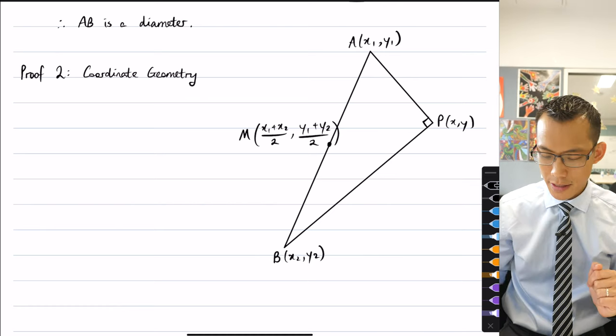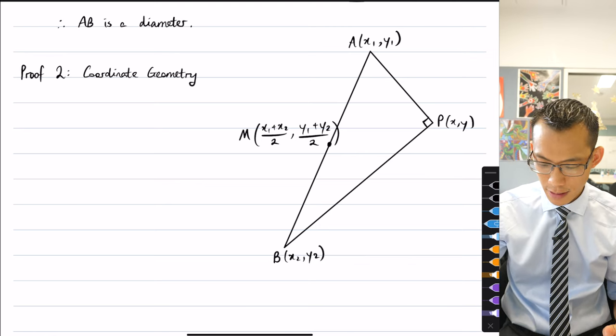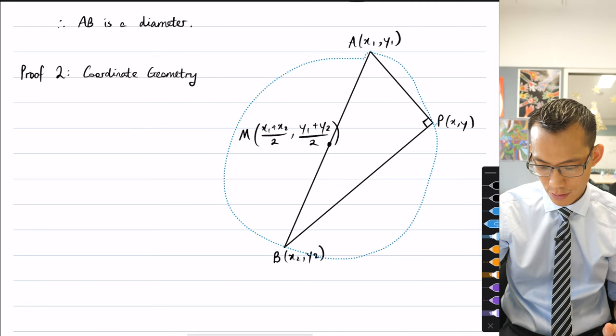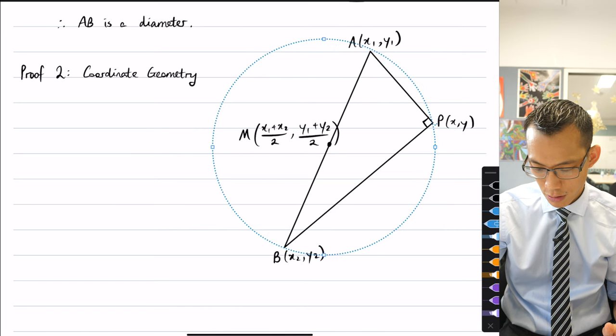Now the reason why this is helpful is I can then say hey, if there's some mystical circle, something like this. Wow that's horrendously drawn but you get the idea. If I've got some circle like so, it's not bad actually, it's an imaginary circle, I don't know where it actually is.